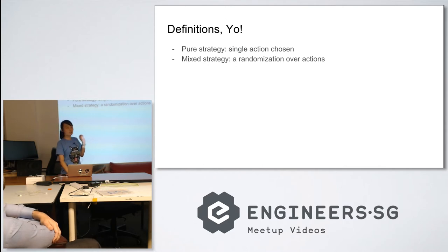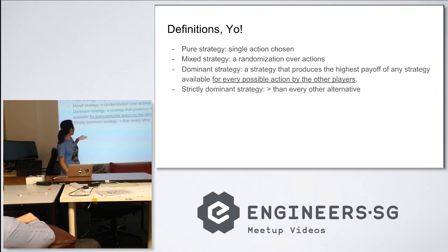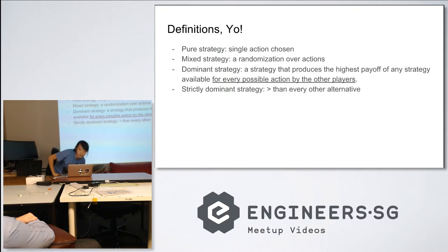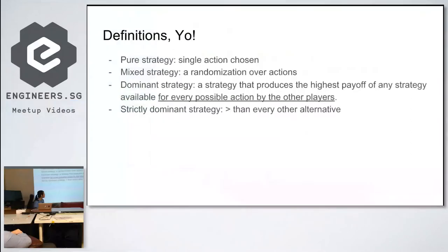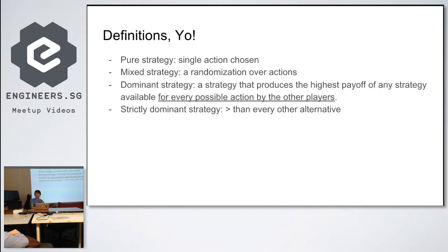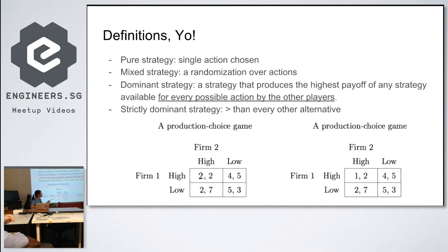For now we're going to talk about pure strategies, and we'll get to mixed strategy if we have time. Something called dominant strategy: a dominant strategy is a strategy that produces the highest payoff of any strategy available for every possible action by the other players. If a player has a dominant strategy, they don't care what other players do — they just always play it.